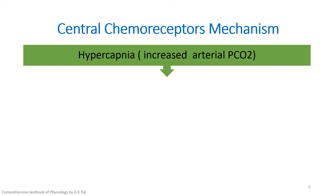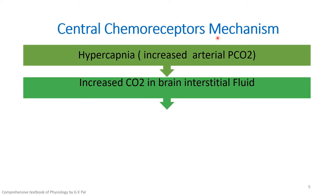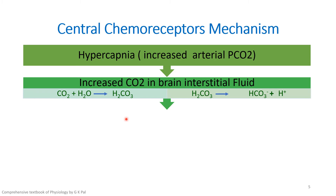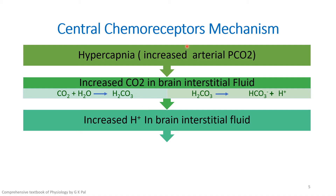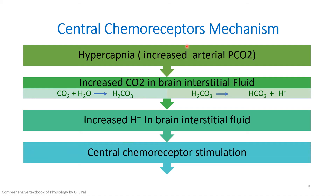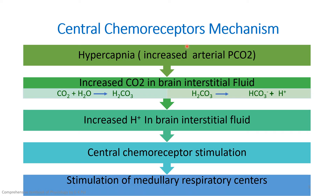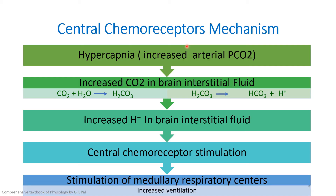Now for the mechanism: whenever there is increased PCO2, known as hypercapnia, there will be increased carbon dioxide in the brain interstitial fluid. This carbon dioxide combines with water to form H2CO3, which dissociates to form bicarbonate and H plus. The increased H plus in the brain interstitial fluid causes central chemoreceptor stimulation, which in turn stimulates the medullary respiratory centers — the DRG and the VRG — causing increased ventilation. You can write this flow chart for the mechanism of central chemoreceptors.